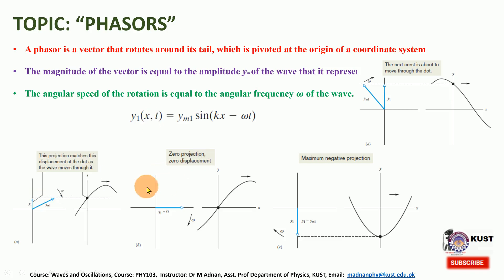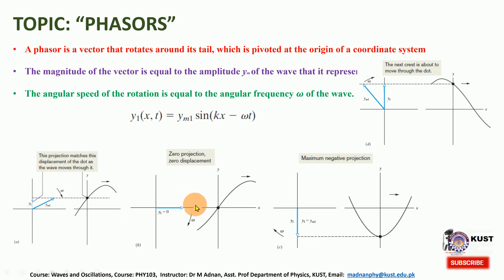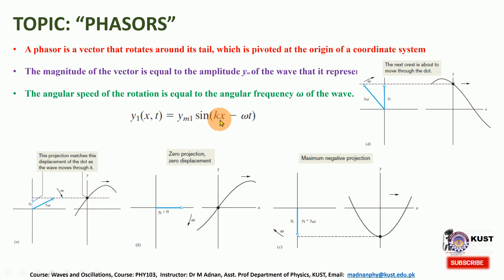Different positions, or different snapshots taken at different times, give different magnitudes of the phasors. With this concept, we will next see how we can add two waves or two phasors based on this phasor diagram.